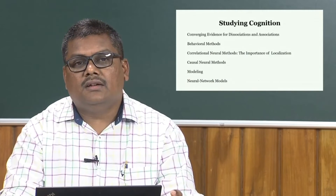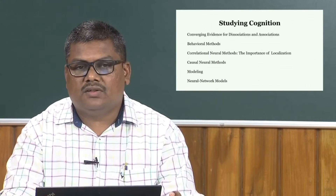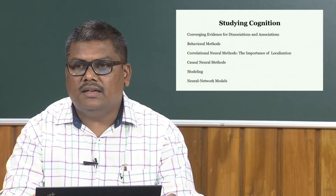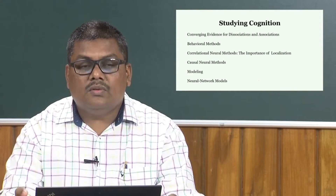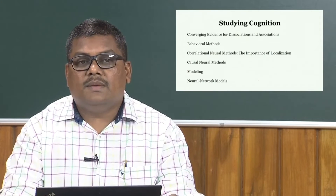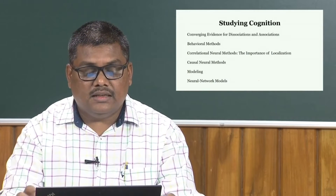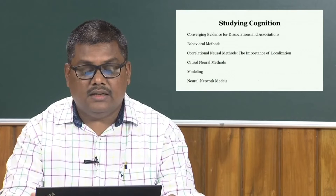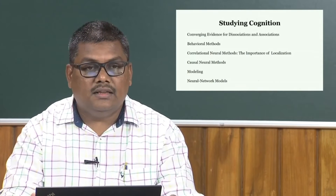There are four different methods through which cognition can be studied: the behavioral methods, the correlational neural method, the causal method, and modeling. Within modeling, we have the box model approach and the neural network model approach.